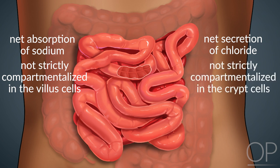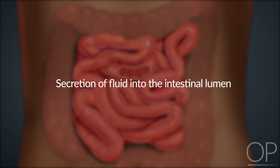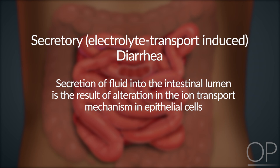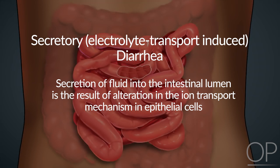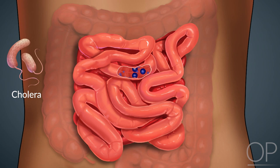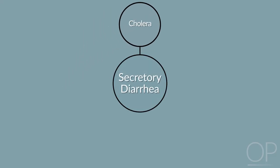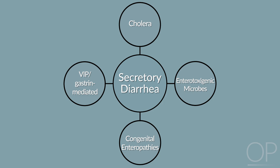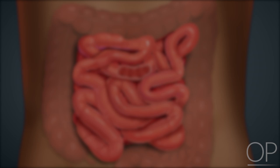An increase in the secretion of fluid into the lumen, referred to as secretory or electrolyte transport-induced diarrhea, is the result of an alteration in the ion transport mechanism in epithelial cells. A classic example of secretory diarrhea is cholera, where the produced toxin induces excessive chloride transport, causing large and life-threatening movement of chloride and water into the lumen of the intestine. Additional etiologies of secretory diarrheas include other enterotoxogenic microbes, congenital enteropathies, and diarrhea mediated by gastrointestinal peptides such as VIP and gastrin.